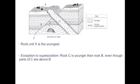Now, in this cross section, rock unit X is the youngest. This is because it intruded after all of the sedimentary layers were deposited. Also, in this cross section, we can see an exception to the law of superposition because parts of rock layer C are above rock layer B even though rock layer C is older. This happened when the rock shifted along fault Z.